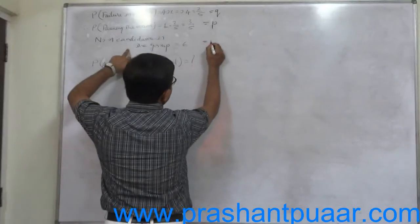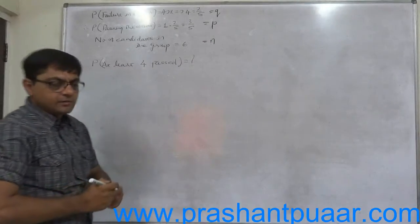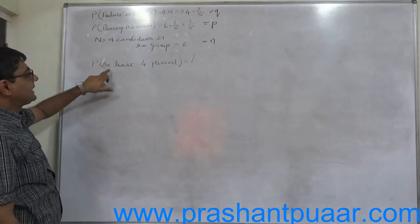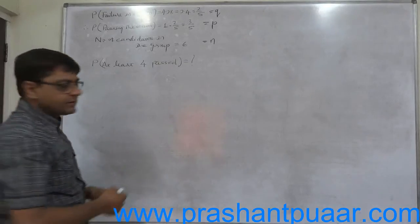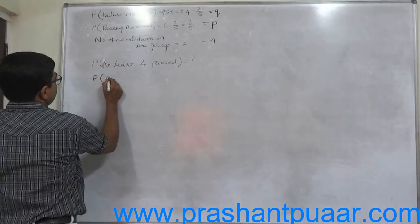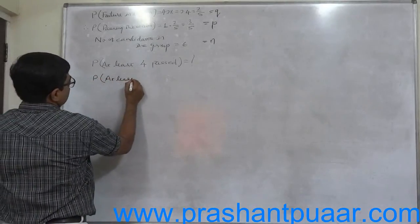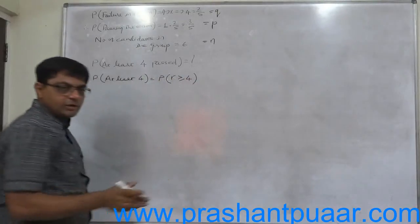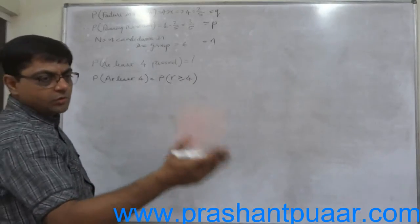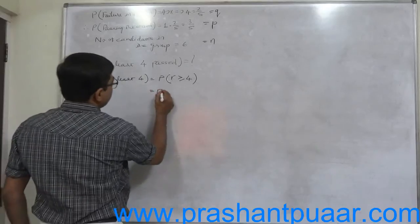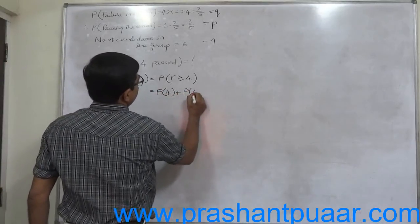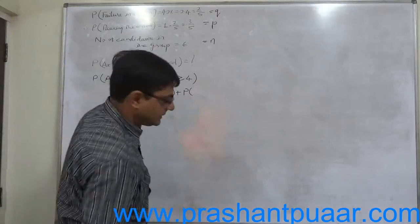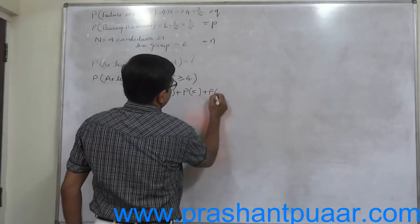Number of candidates in the group are 6, that can be taken as n. Out of this 6 we want to find the probability that at least 4 passed the examination. What do you mean by at least 4? That means probability of X greater than or equal to 4. We have two options, either from 4 to n or 1 minus from 3 to 0. We are going for either 4 or 5 or 6, so we have to find the answer of these three and the summation will be the final answer.